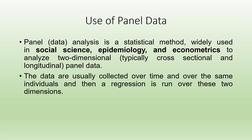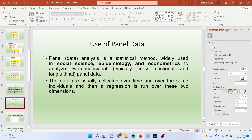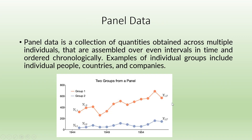Panel data analysis is a statistical method widely used in social science, epidemiology, and econometrics to analyze two-dimensional — typically cross-section and longitudinal — panel data. The data are usually collected over time and over the same individuals, and then a regression is run over these two dimensions. Panel data is a collection of quantities obtained across multiple individuals assembled over even intervals in time and ordered chronologically. Examples of individual groups include individual people, countries, and companies.